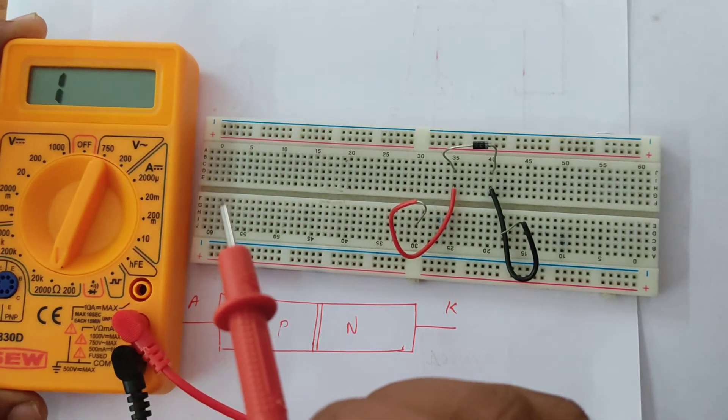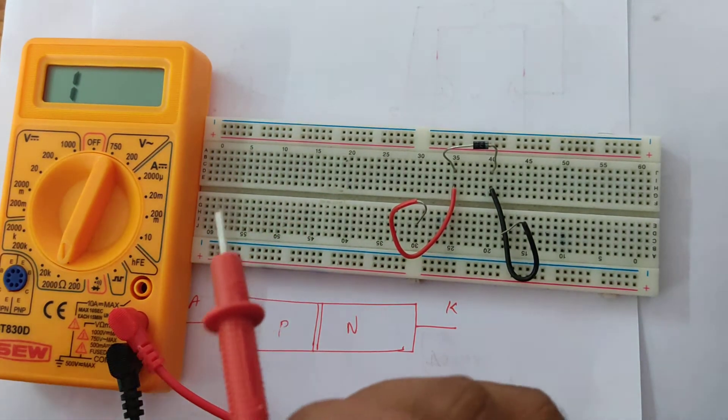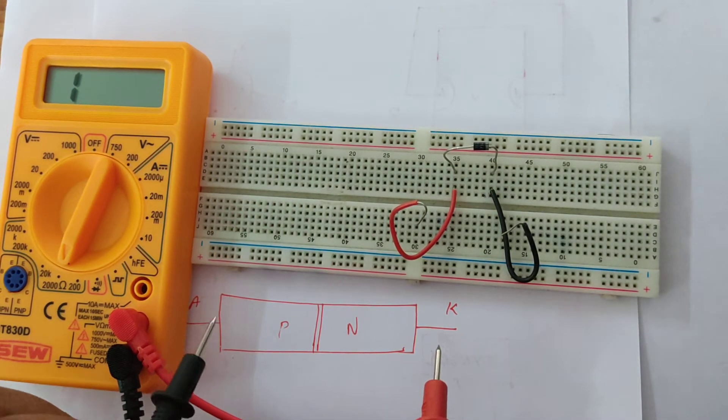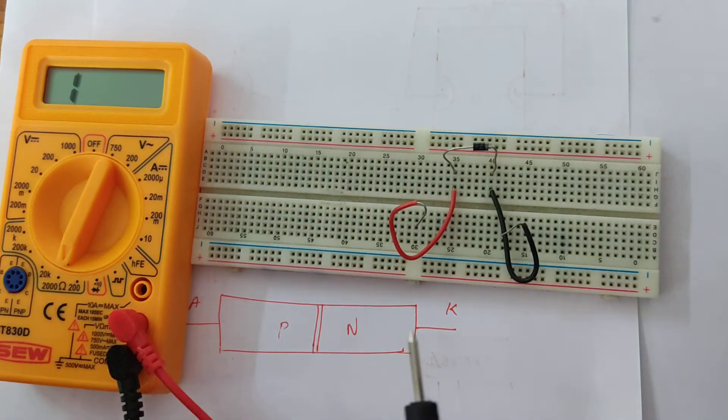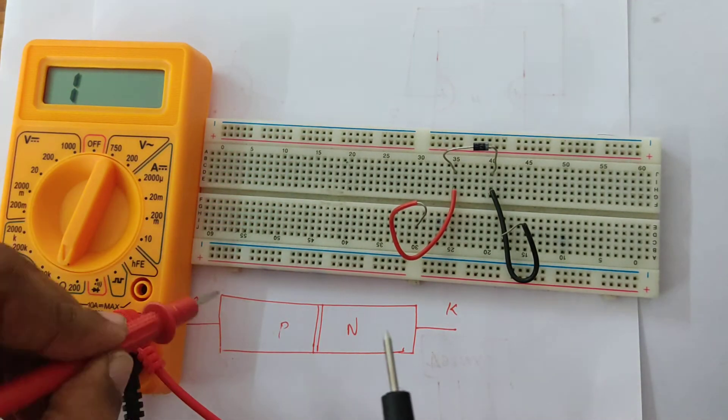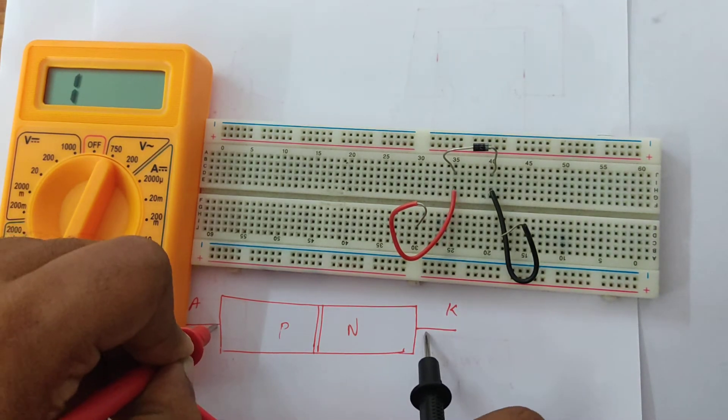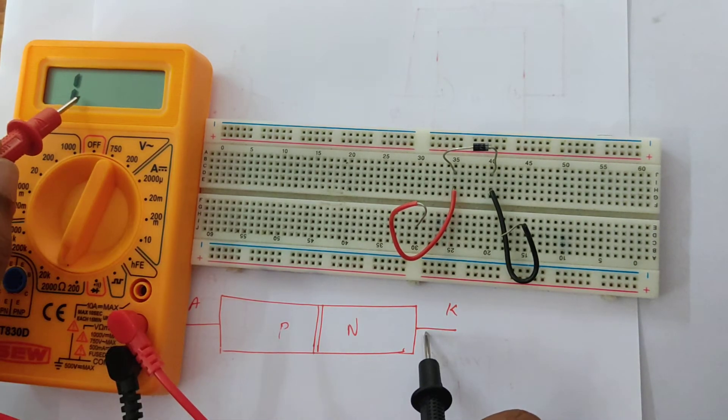We are going to check whether there is some resistance or not. What I am going to do first is give the red probe to the anode and the black probe to the cathode and see what resistance is available.